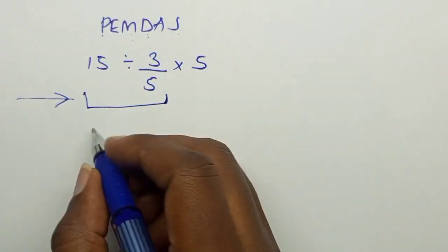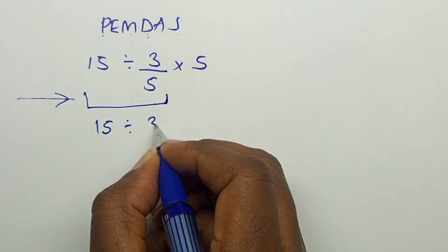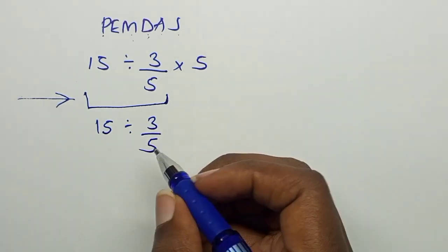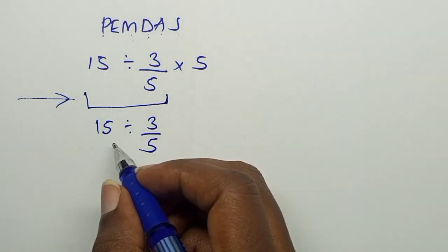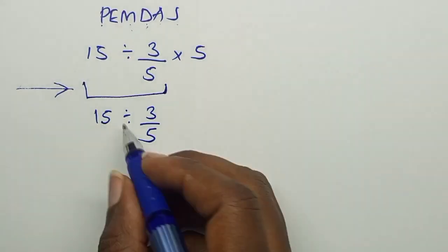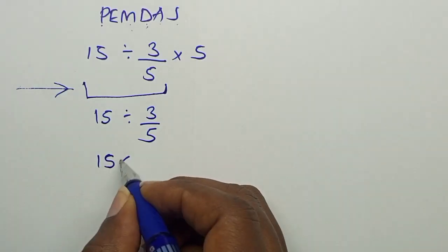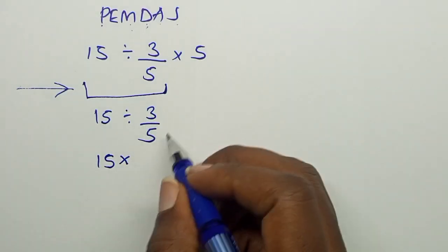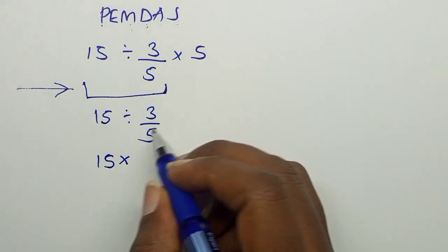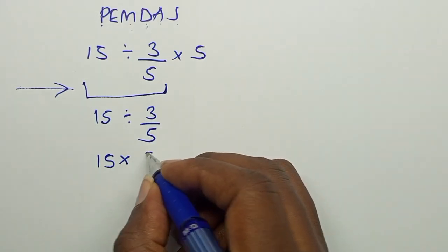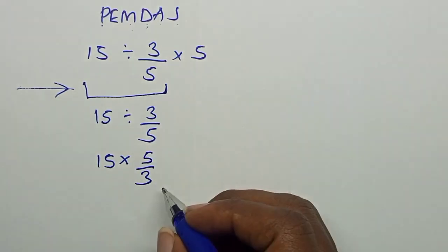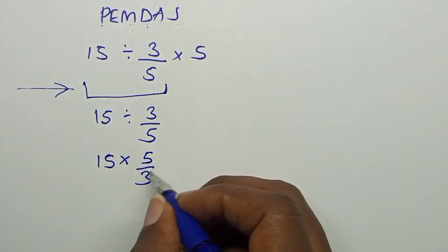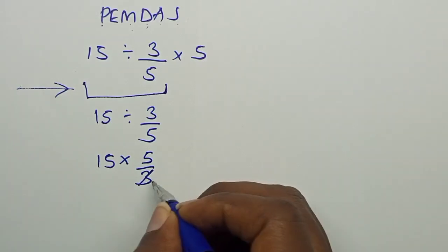So it will be 15 divided by 3 over 5. Here we can change this sign. We can say 15 times, then we find the reciprocal of this fraction, which is 5 over 3. Here we can divide, 15 is divisible by 3, 5 times.